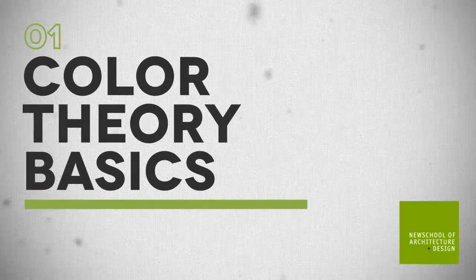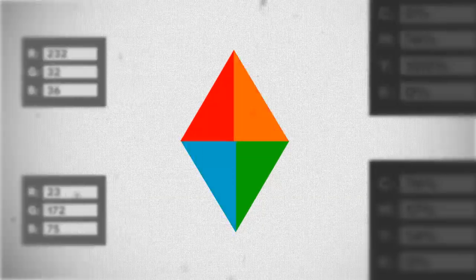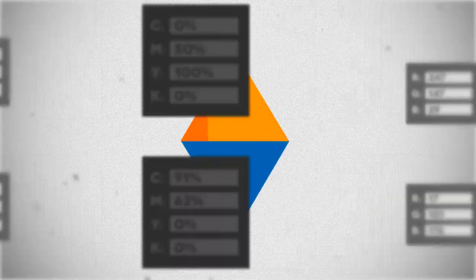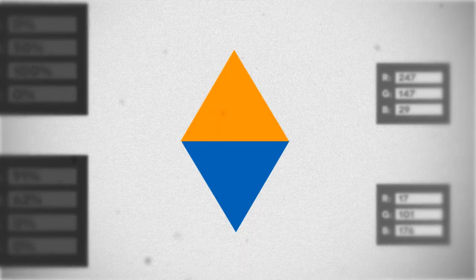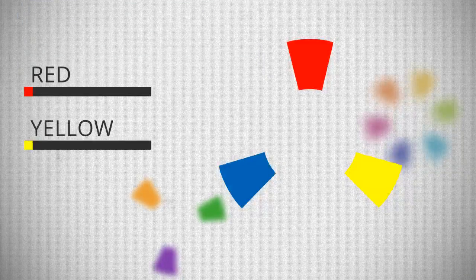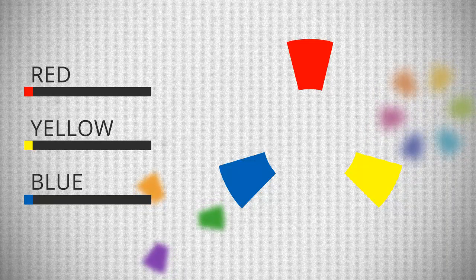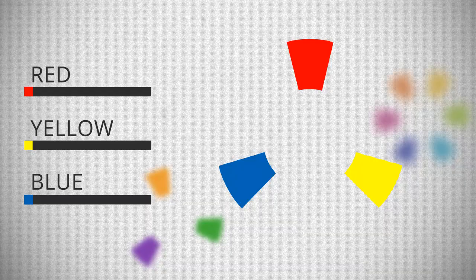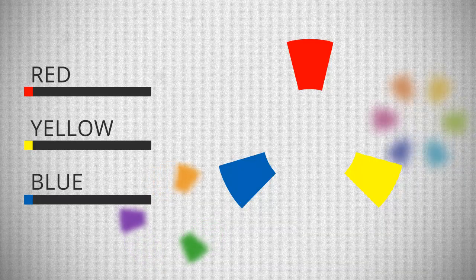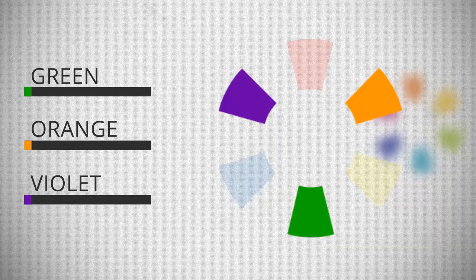Color theory basics: how are colors created? Color theory is an examination of the relationship of colors and their interactions. Primary colors — red, yellow, and blue — are the foundation of the color wheel. The primary colors are the purest colors on the chart and are not made from mixing colors. Secondary colors — green, orange, and violet — are created by mixing two primary colors.